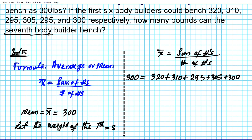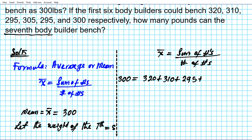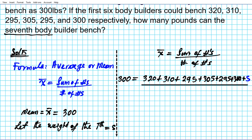We add the 7th bodybuilder's weight, which we're calling S. Then we divide the entire sum by the total number of numbers we are adding, which is 7.